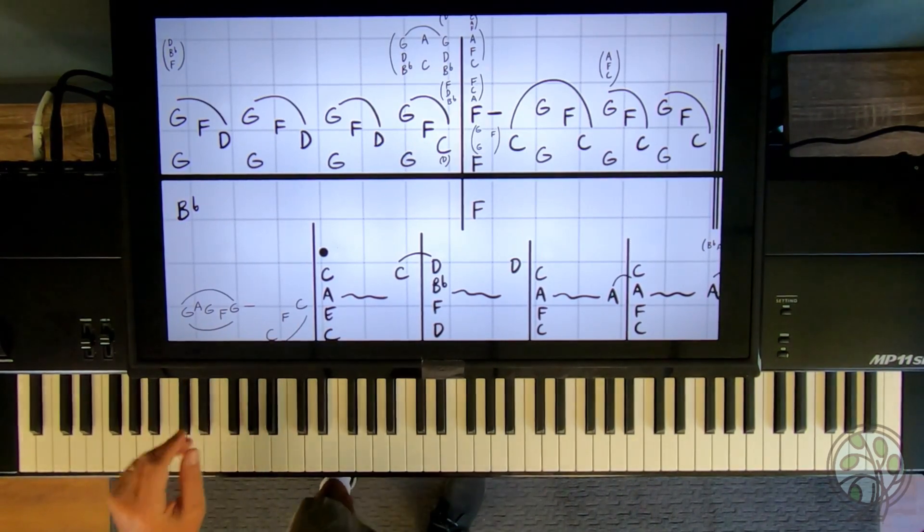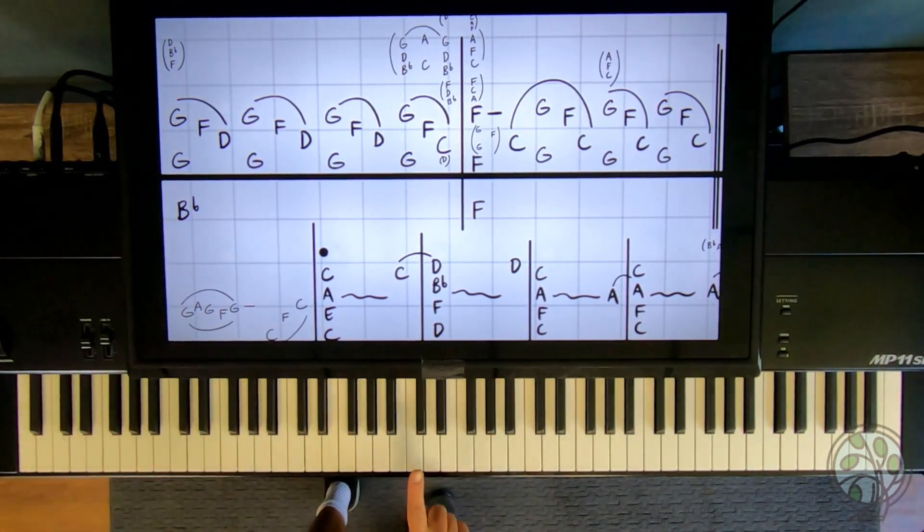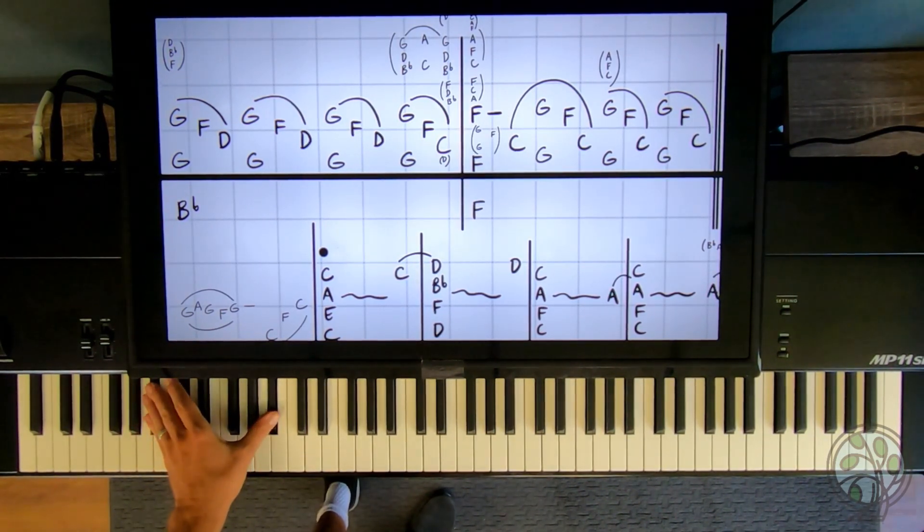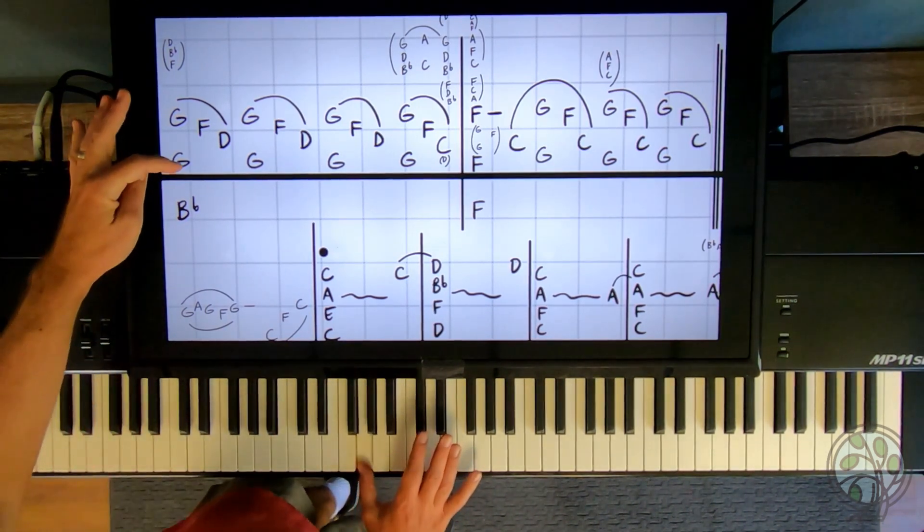Here's the first pattern. We're going to have B-flat on the left hand. Here's middle C, the next C down. B-flat on the thumb, B-flat on the fifth finger. So I have that. I'm just going to stay there for the whole measure.